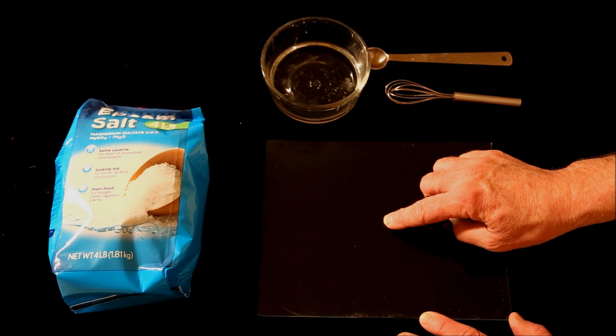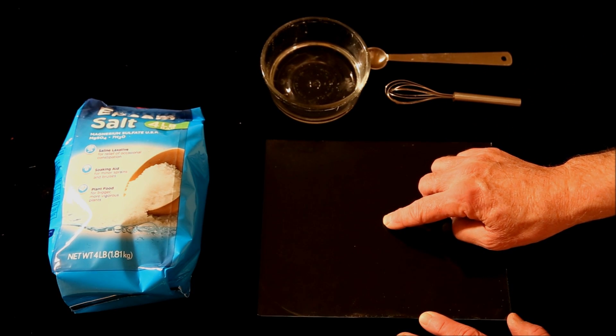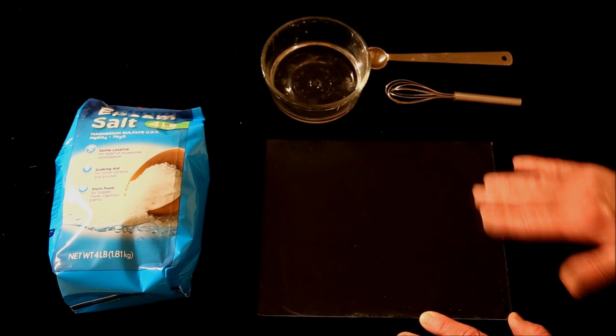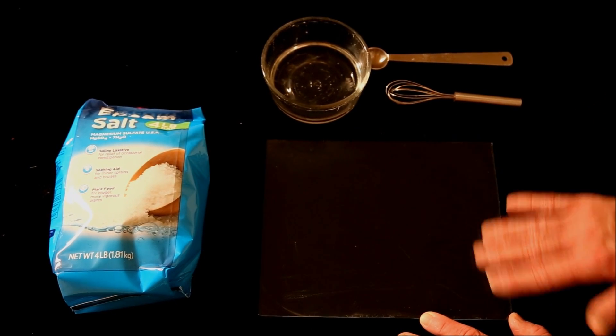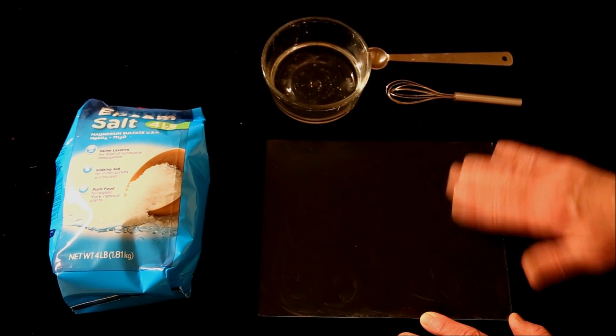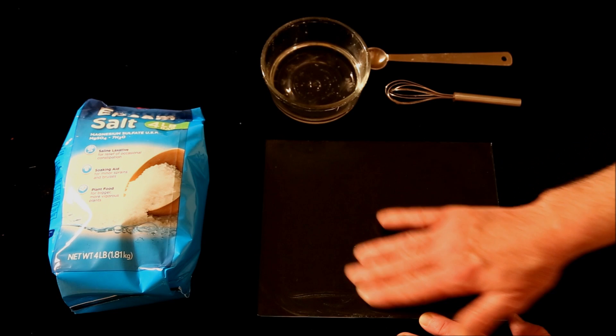Take one drop of dishwashing soap and spread it around over the surface of an 8 by 10 inch sheet of glass. This does two things. First, it protects the glass so that it's easier to wash the crystals off when you're done.